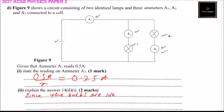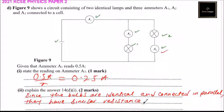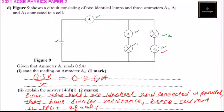Since the bulbs are identical and connected in parallel, they have similar resistance. Hence the current is split equally. That's how you answer that question and you get two marks, totaling three marks for question 14D.